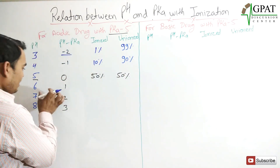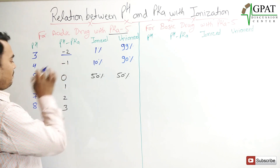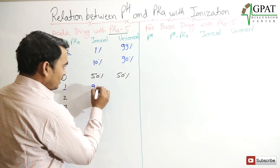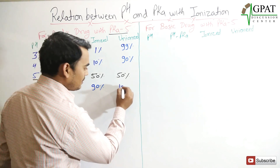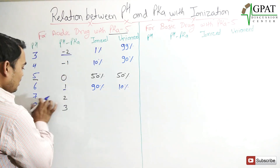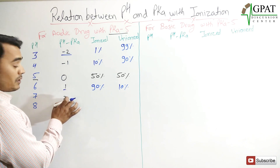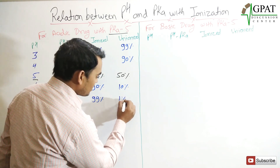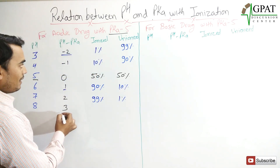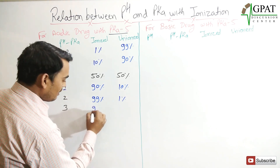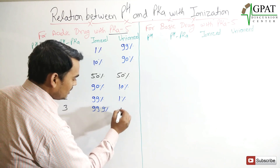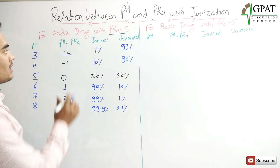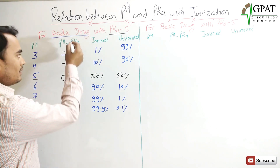When the difference (pH minus pKa) is +1, ionized = 90% and unionized = 10%. When difference = +2, ionized = 99% and unionized = 1%. When difference = +3, ionized = 99.9% and unionized = 0.1%. This is the complete condition for an acidic drug.